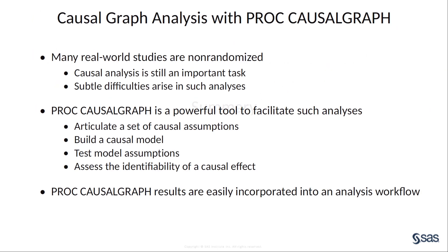In summary, there are many practical applications that require causal analysis of data from non-randomized experiments. Causal graphs are a powerful technique that you can use to handle many of the subtle difficulties that arise from the lack of randomization in these studies. The CausalGraph procedure is designed to facilitate the use of graphical causal models by providing a convenient combination of grammar and options to articulate model assumptions and build a causal model, test those model assumptions, and assess the identifiability of a causal effect. As you have seen in the second example, the results from PROC CAUSALGRAPH are easily incorporated into other statistical analysis procedures.